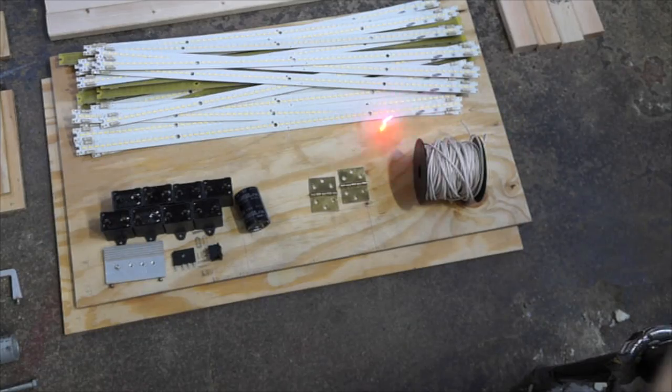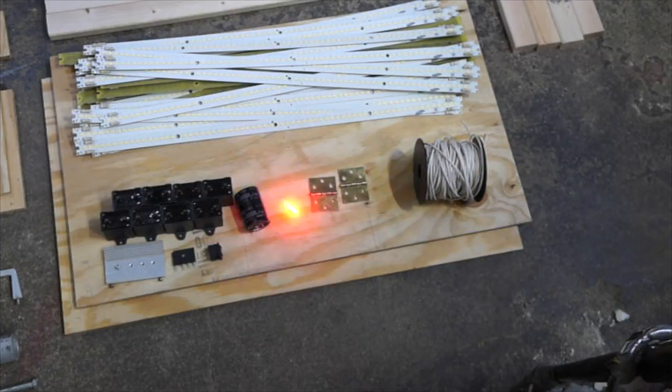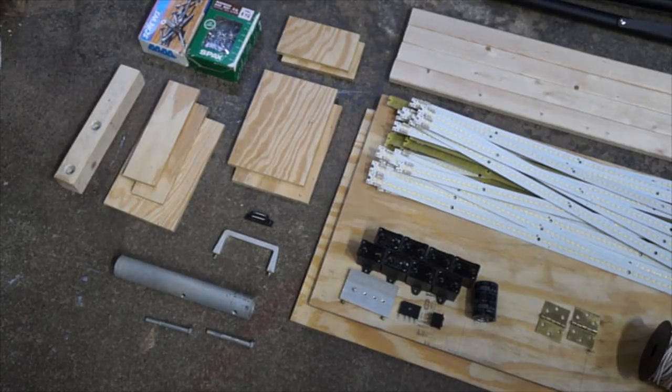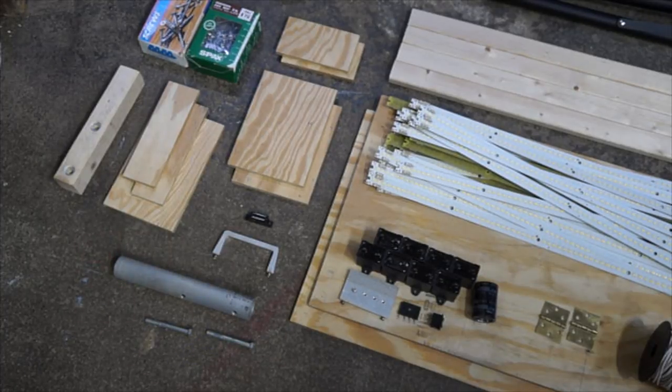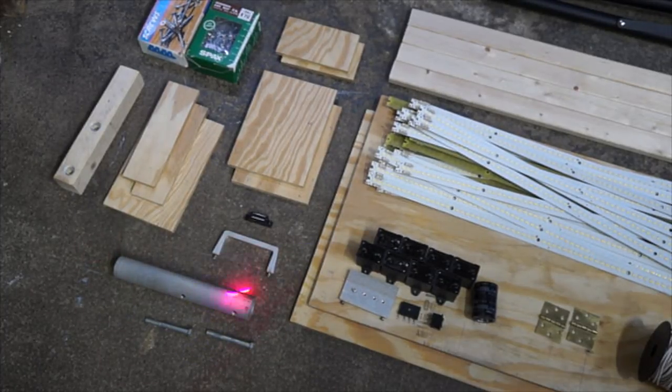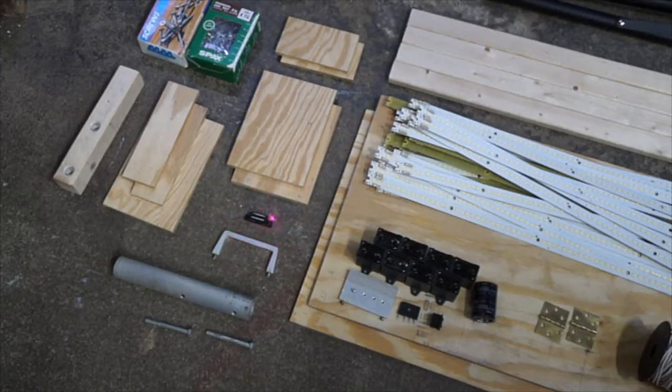We also need some wire to connect everything together, hinges to allow the LED panels to fold, along with some other hardware like this piece of aluminum tubing or PVC to mount the fixture to the tripod, two bolts for that tube, a handle of some kind, and a magnetic latch to hold the two panels open.